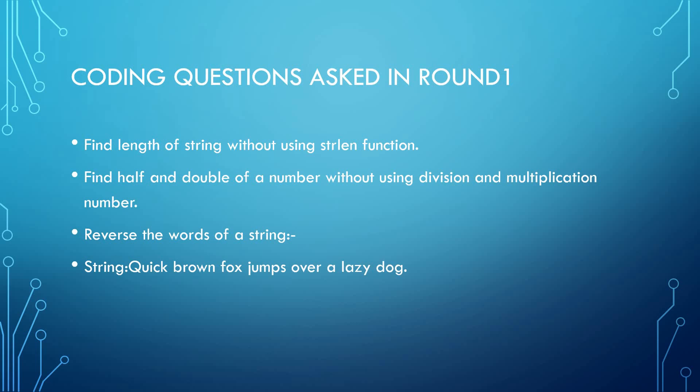The first coding question was: find the length of a string without using the string length function. The second question was to find the half and double of a number without using division and multiplication. If you know bitwise operators — specifically the left shift and right shift operators — you can easily solve this problem.